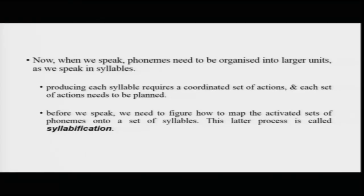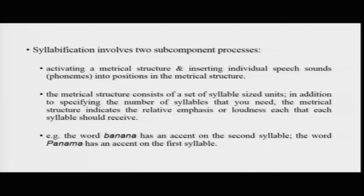We organize phonemes into larger chunks called syllables. Producing each syllable requires a coordinated set of actions performed in sequence. Before we speak, we need to figure out how to map activated phonemes onto a set of syllables — taking this amorphous organization to a more organized form. This process of organizing activated phonemes into syllables is called syllabification. Syllabification involves two sub-component processes: first, activating a metrical structure, and second, inserting individual speech sounds into positions in that metrical structure.